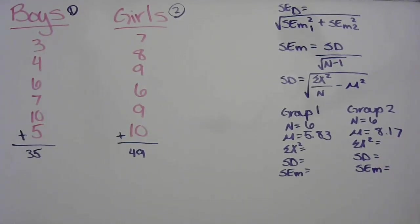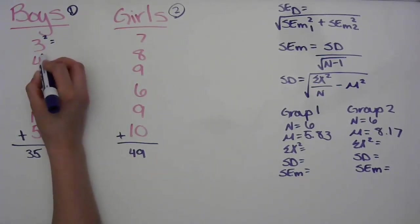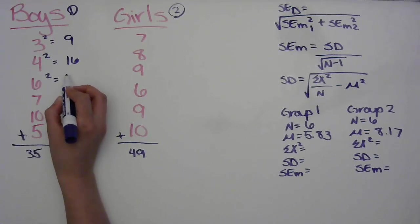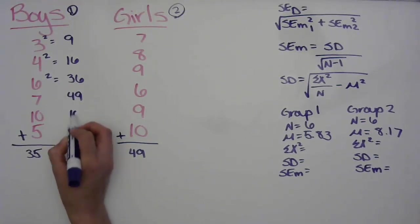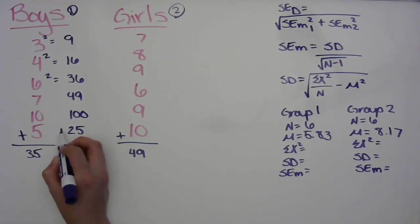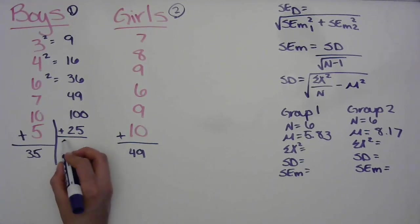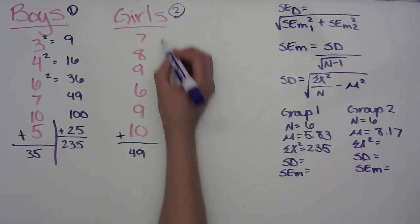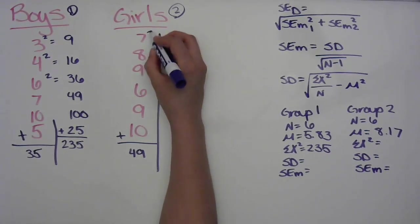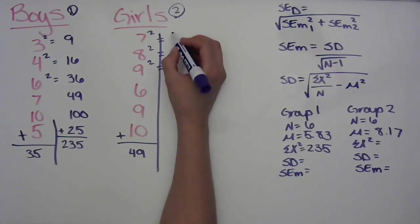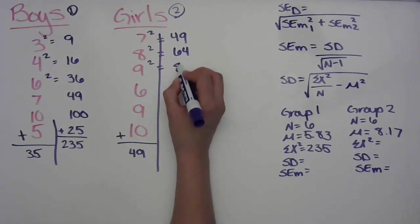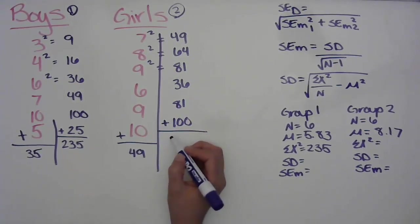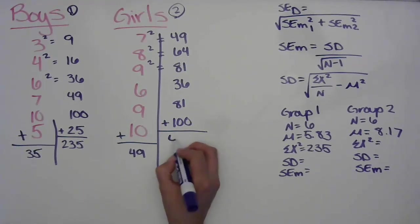Next let's figure out the x-squared value. We square all of the raw scores and add them up. For group one that gives us 235. For group two, squaring each score gives us 449, 64, 81, 36, 81, and 100, and when we add all of those together that gives us 411.